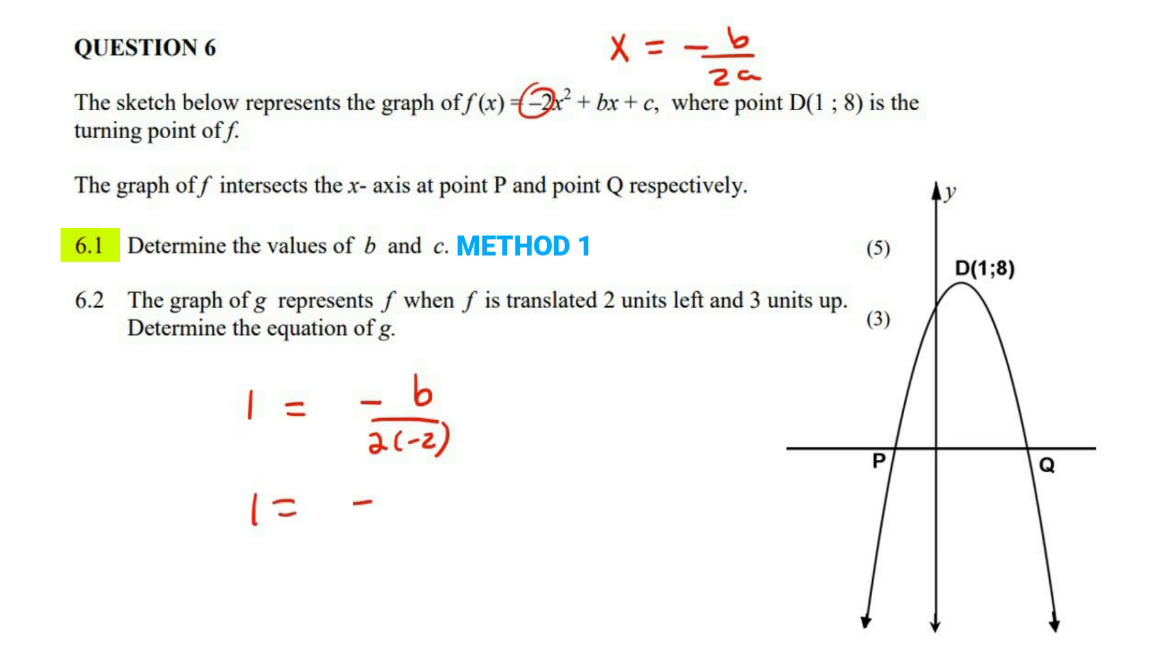And so that means one is equal to negative b over negative four. I'm going to cancel out those negatives. And so we end up with that.